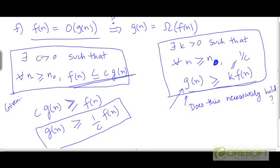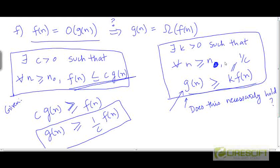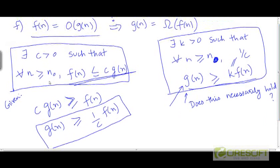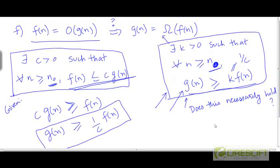So instead of the constant being c, the constant is the reciprocal of c now. And just as there exists a constant c, there also exists a constant k such that g(n) ≥ k times f(n). So with the same threshold n₀ and by taking the reciprocal of the constant, we end up with this claim starting from the original claim. g(n) ≥ k times f(n). And so we have proven that if f is O(g(n)), g(n) is going to be Ω(f(n)).